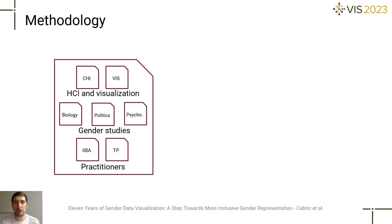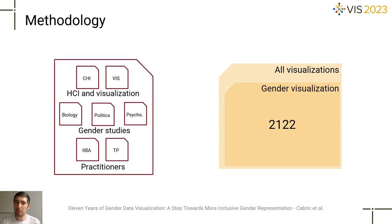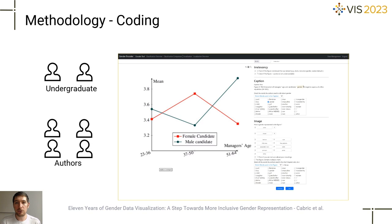In total, we collected over 50,000 data visualizations, and after filtering, 2,122 images were selected and then coded. Six people coded the images — two undergraduate students and four authors of this paper. Each image from the 2,122 was coded by two coders, and if the coders disagreed, a third coder was involved.